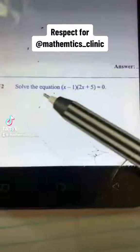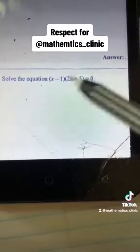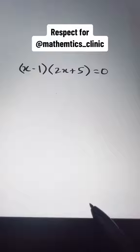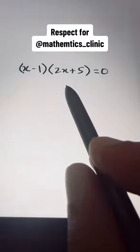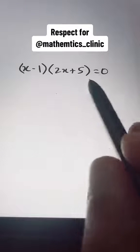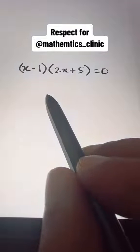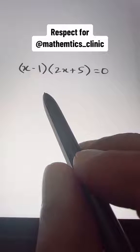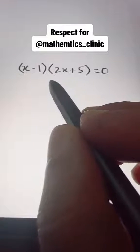So we're going to solve the equation — we have these two factors equal to zero. Now you have learned the normal method, but if you just need the answer in a competitive exam or multiple choice question, here are three simple steps.